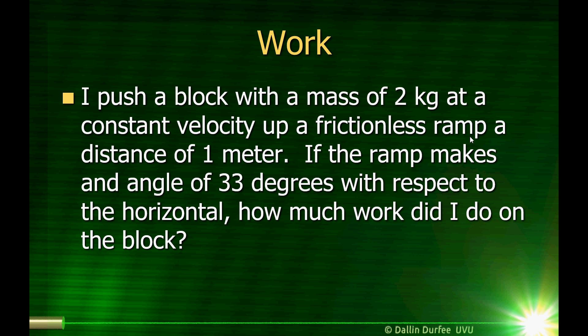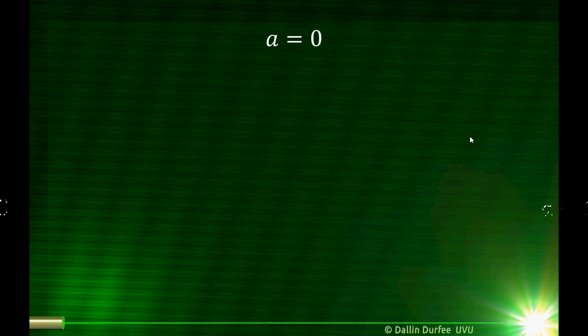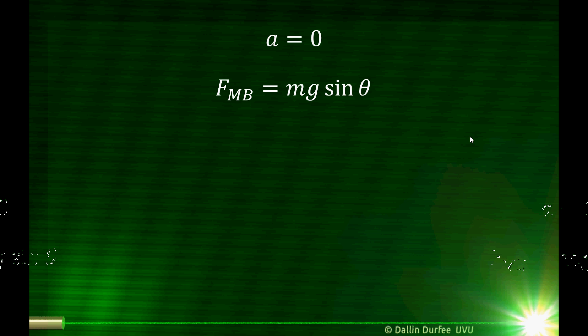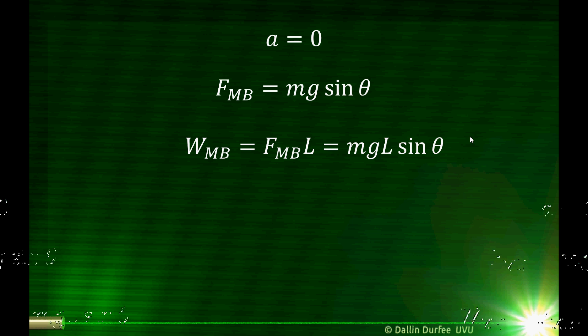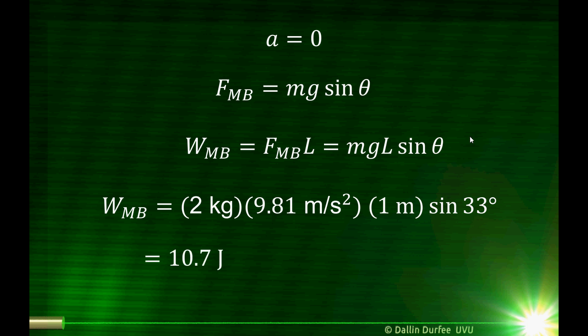Let's finish up with a bunch of examples. I push a block with a mass of 2 kilograms at a constant velocity up a frictionless ramp a distance of 1 meter. If the ramp makes an angle of 33 degrees with respect to the horizontal, how much work did I do on the block? Work is force times distance. If it's moving at a constant velocity, the acceleration is zero, so there's no net force on the block. One component of gravity is canceled by the normal force, and the other component is canceled by me pushing. So the force I'm pushing with must just equal the component of gravity down the slope, which is mg sine theta. The work I do is mg times L times sine theta. Plugging in the numbers, the work I do is 10.7 joules.